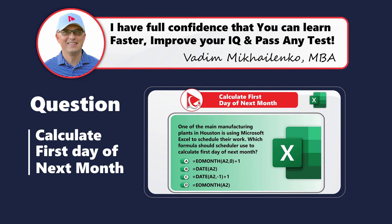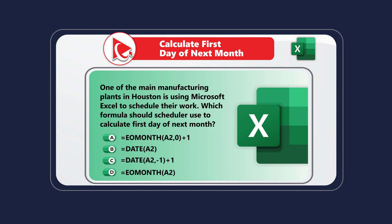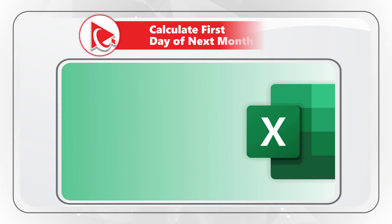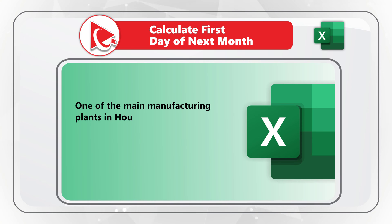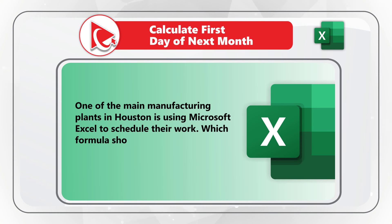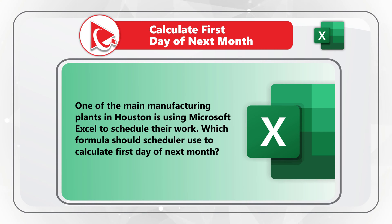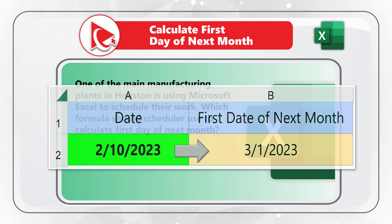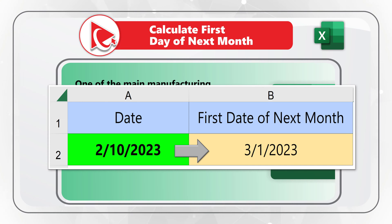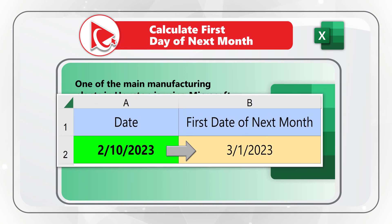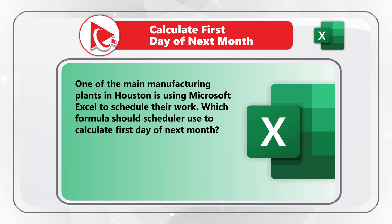Here's a very interesting Excel test question where you need to calculate the first day of the next month. One of the manufacturing plants in Houston is using Microsoft Excel to schedule their work. Which formula should the scheduler use to calculate the first day of next month? You're presented with today's date, which is February 10th of 2023, and you have four different choices for the formula.